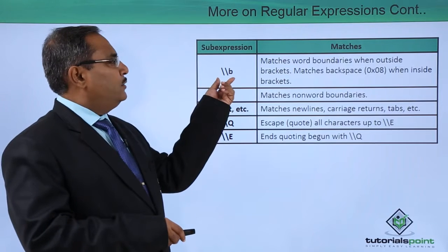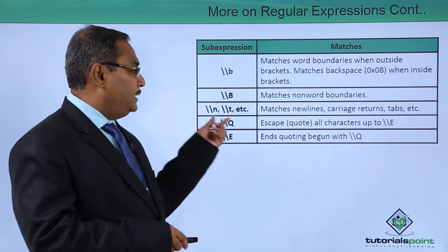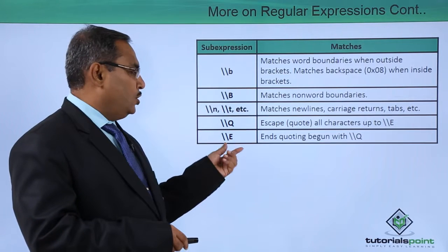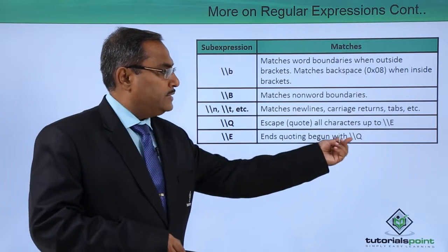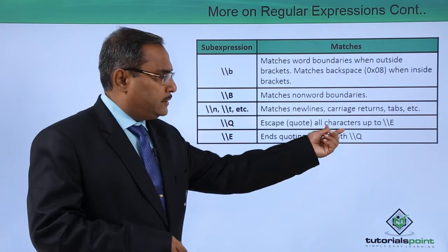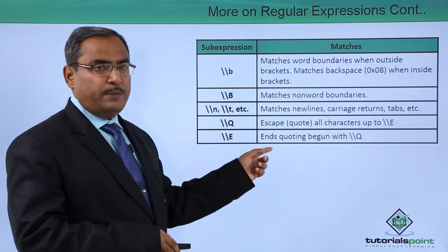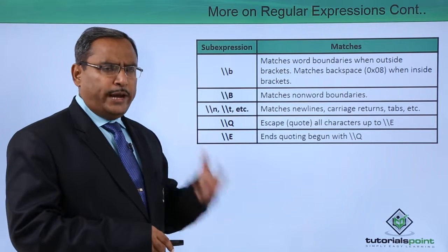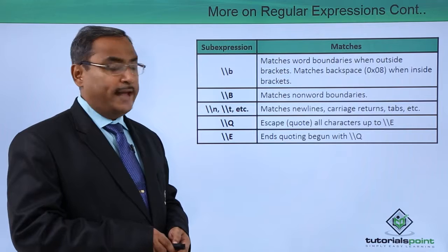We also have `\b`, `\B`, `\n`, `\Q`, and `\E`. The `\Q` begins quoting and escapes all characters up to `\E`. These are written with their respective matches in the table. To get a clearer understanding, let us now go through some examples.